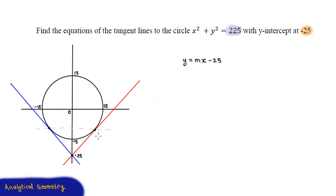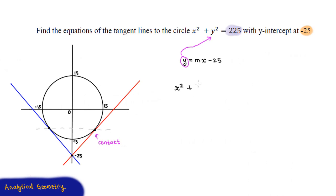We can set up a simultaneous equation. For each of these straight lines — both the red one and the blue one — they are going to be defined by some equation: y is equal to some gradient m times x minus 25. We can take this y-value and substitute it into the equation of the circle, because at the point of contact those y-values are going to be equal. This gives us x squared plus (mx minus 25) squared is equal to 225.